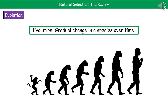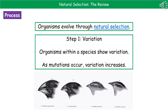Welcome to our review on natural selection. The first thing we need to know is what the word evolution means. If ever you're asked what is evolution, it is the gradual change in a species over time. In terms of how this actually comes about, organisms will evolve through natural selection.